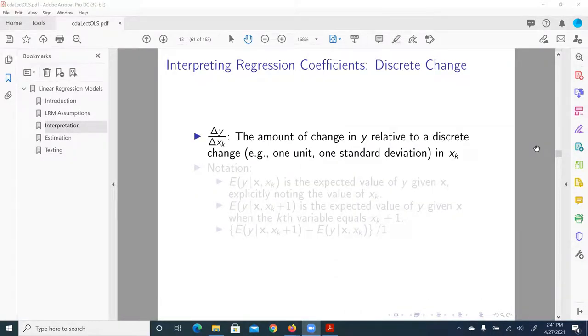Next, let me talk about discrete change. First is definition of discrete change. Discrete change is a ratio of delta y over delta x_k. The amount of change in y could be very large or could be infinitesimal, very small in y, relative to, in the format of ratio, relative to a discrete change in x_k. Again, a generic variable x_k could be any of the predictors. And here, a discrete change in x_k could be one unit, could be two units, could be one standard deviation, could be 1.75 standard deviations in x_k. It doesn't matter.